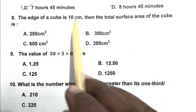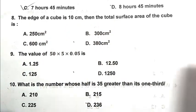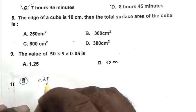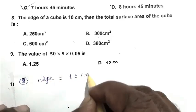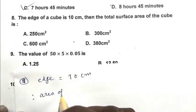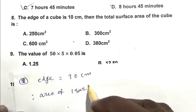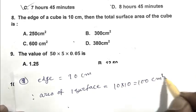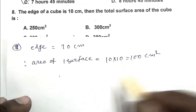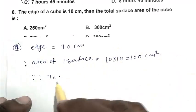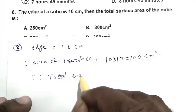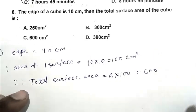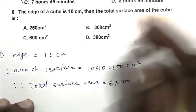Question number 8: The edge of the cube is 10 centimeters. Find the total surface area of the cube. Edge = 10 cm, so the area of 1 surface = 10 × 10 = 100 cm². We know that a cube has 6 surfaces, so the total surface area = 6 × 100 = 600 cm². So C is the right answer.